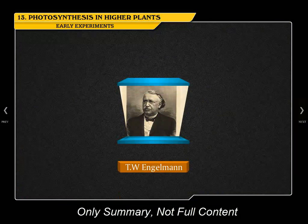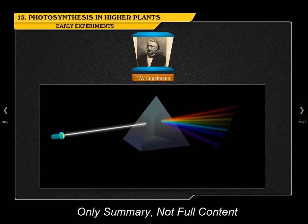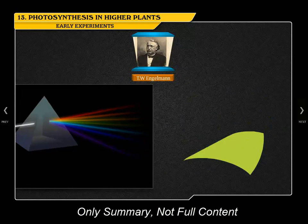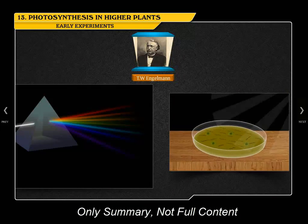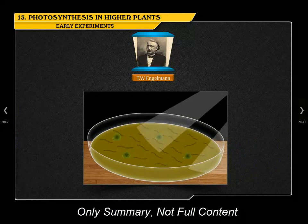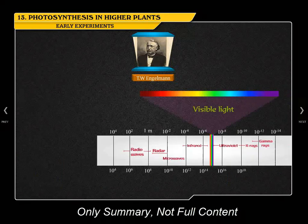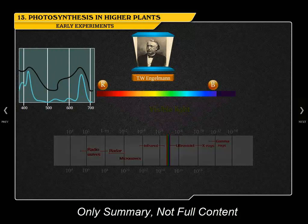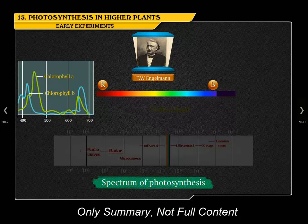T.W. Engelmann conducted an experiment using a prism to split light into its spectral components. He placed Cladophora, a green alga, in a suspension of bacteria. When bacteria were used to detect the sites of oxygen evolution, he observed their accumulation in the blue and red light regions of the spectrum. This was the first description of the action spectrum of photosynthesis, and it resembled the absorption spectrum of chlorophyll A and B.